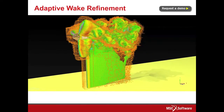In traditional CFD approaches, the mesh must be either fine in all areas, which is inefficient, or refined in areas of interest. In this case, you need to know the solution before you mesh. Adaptive wake refinement saves both computational time and memory requirements, as the engineer doesn't have to know in advance where the detail is required, and it adapts dynamically throughout the computation.